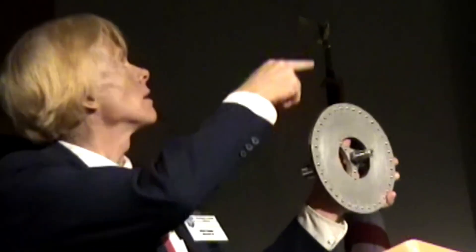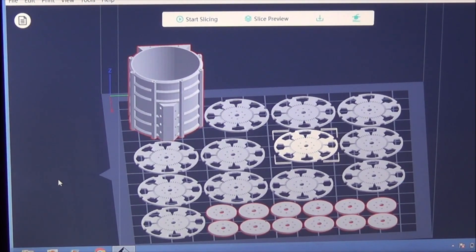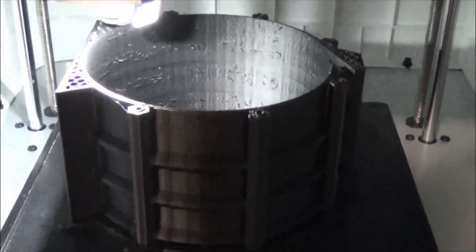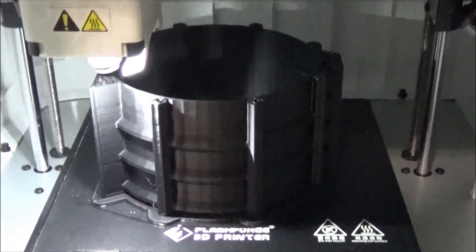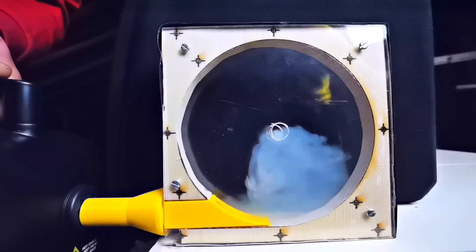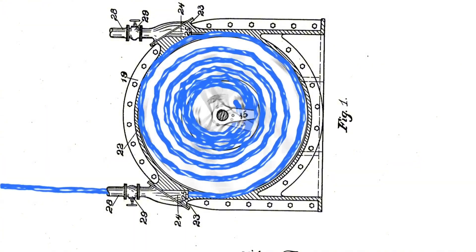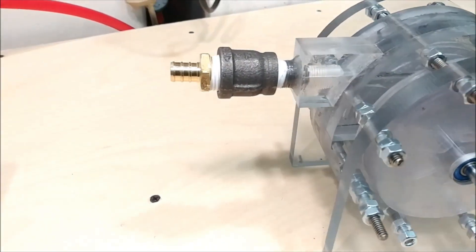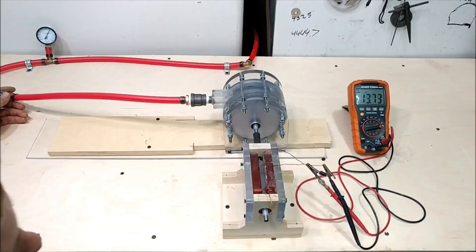The Tesla turbine consists of a series of smooth metal discs mounted on a shaft and enclosed in a sealed chamber. The discs are very close to each other, with a small gap between them. A fluid — such as air, water, steam, or gas — enters the chamber through one or more nozzles and hits the edge of the discs at high speed and pressure.